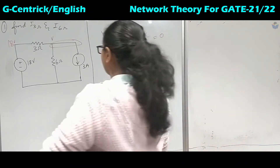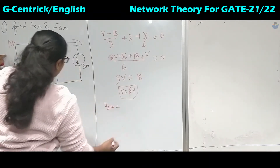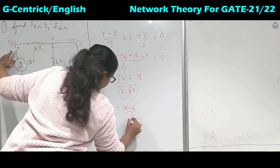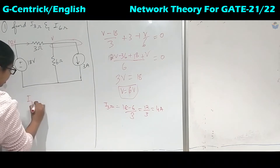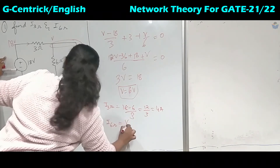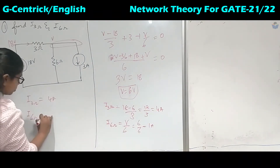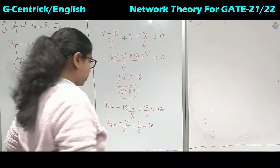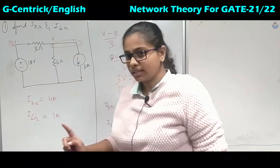With V = 6 volts, we can find I₃Ω. Since 18 V is at higher potential, I₃Ω = (18 − 6) / 3 = 12 / 3 = 4 amperes. For I₆Ω = V / 6 = 6 / 6 = 1 ampere. So I₃Ω = 4 A and I₆Ω = 1 A from nodal analysis.